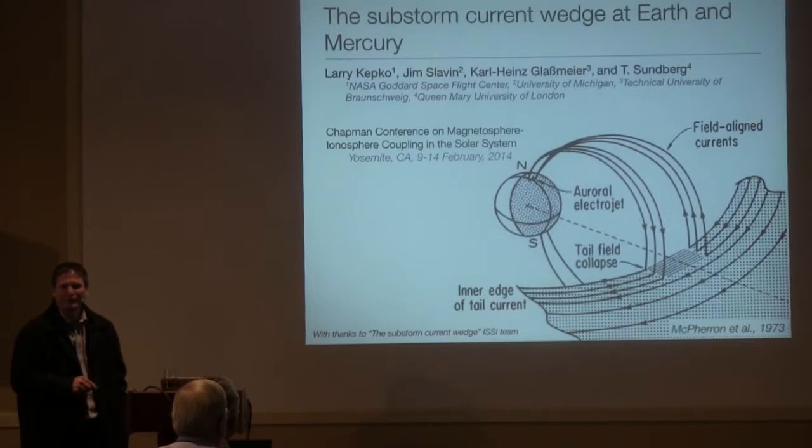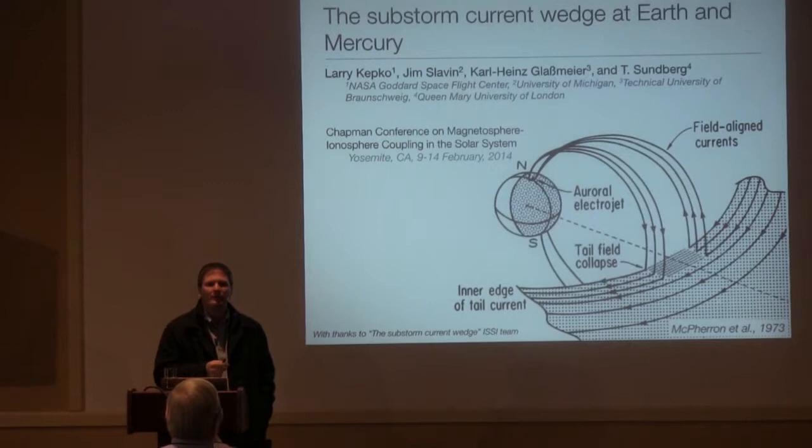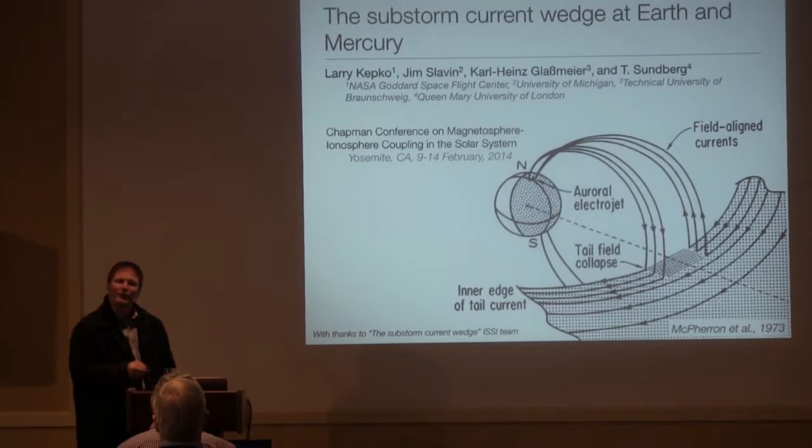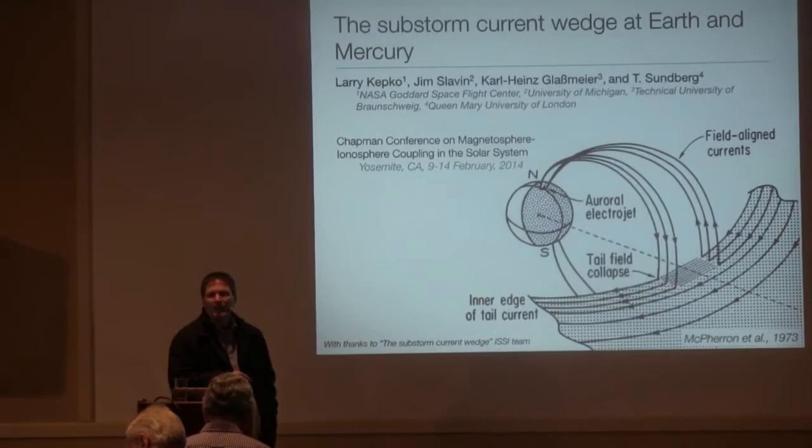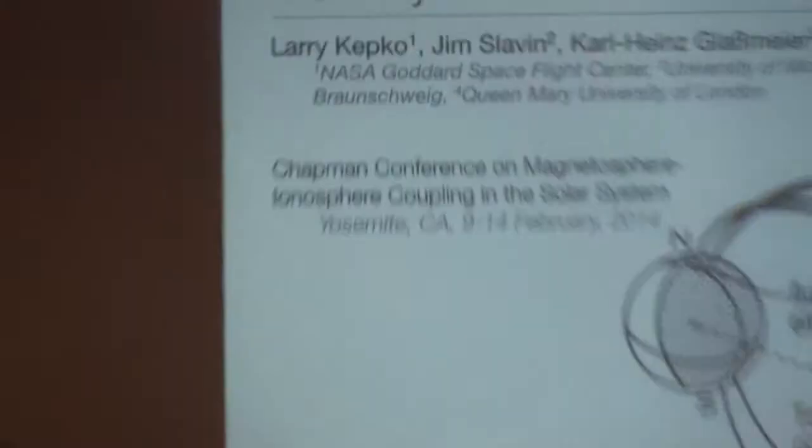And the important part of the substorm current wedge is that it transmits the stress that occurs in this dipolarization region to the ionosphere and transmits the stresses at the ionosphere once it's imposed on the magnetosphere back. So it's a really nice example of MI coupling at Earth. But it's a quasi-static picture. And as we go to Mercury, we're going to find this quasi-static picture doesn't really apply.